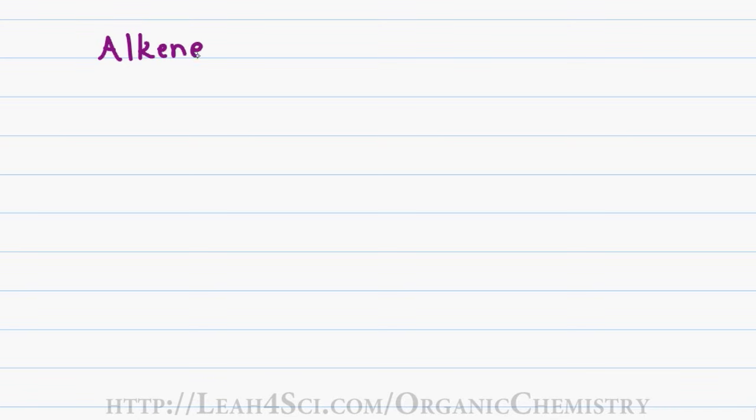Recall that an alkene is a molecule that has a carbon to carbon double bond and gets the last name of ene, and an alkyne is a molecule that has a carbon to carbon triple bond and gets the last name of yne. But how do you name a molecule that has both a double bond and a triple bond?